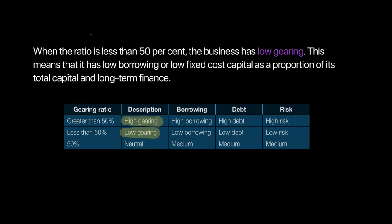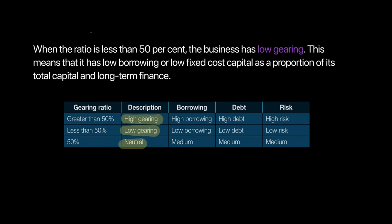A company with exactly 50% gearing is considered neutral — medium borrowing, medium debt, and medium risk. When calculating gearing, always compare the result against greater than 50%, less than 50%, and equal to 50%.